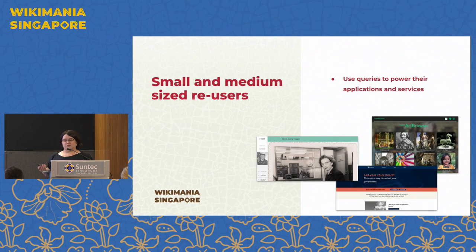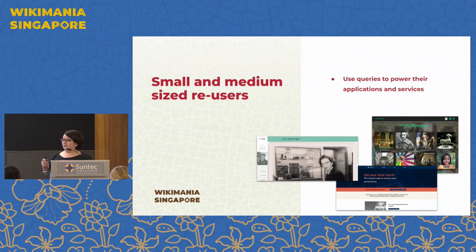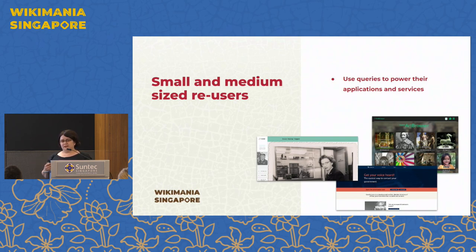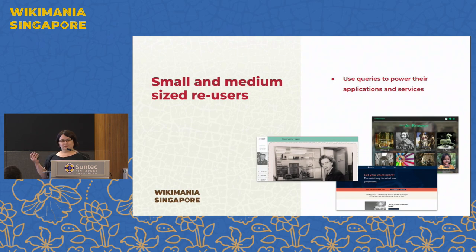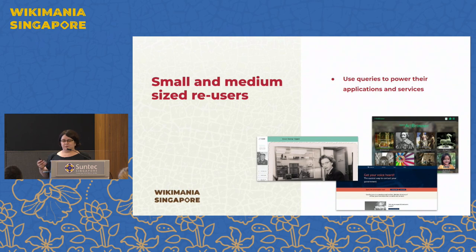Then we have what I call small and medium-sized re-users — people, organizations, groups building applications on top of Wikidata to help people understand the world better and share knowledge. For example, Gov Directory is a tool to help people connect to their government using Wikidata. Or the Open Art Browser, a cool tool to dive into visual art, sculptures and more. Or a tool to better understand women scientists and the contributions they've made.